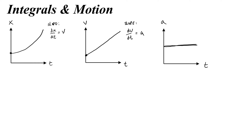The slope of acceleration versus time is called jerk, but we're not going to look at that here. If the derivative is telling us about slopes, the antiderivative is telling us about the opposite — which in graphing terms is area. The area of an acceleration versus time graph is the change in velocity. And the area of a velocity versus time graph is the change in position. So antideriving tells me about the previous graph.